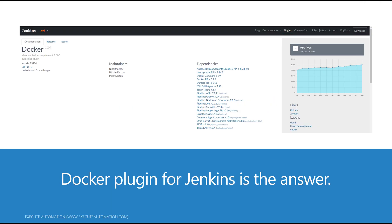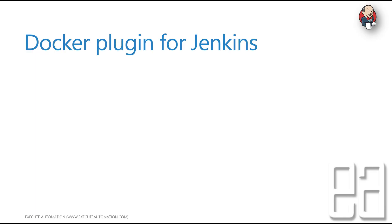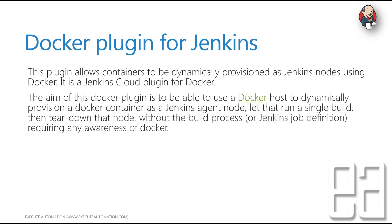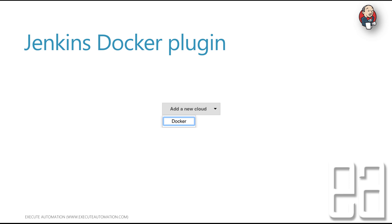The Docker plugin for Jenkins is the answer. There is a special plugin for Jenkins where you install the Docker plugin, which acts as a build agent. It allows containers to be dynamically provisioned as Jenkins nodes using Docker. It is a Jenkins cloud plugin for Docker, and its aim is to use a Docker host to dynamically provision a Docker container as a Jenkins agent node, run a single build, then tear down the node — without the build process requiring any awareness of Docker.